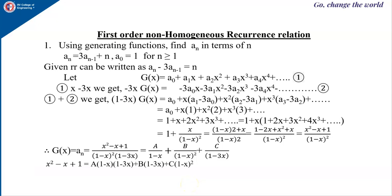Good morning. In my last video, you have seen how to solve the recurrence relation using generating functions — that is, first order and second order homogeneous recurrence relations. Today in this video, we are going to see how first order and second order non-homogeneous recurrence relations can be solved using generating functions. Let us first consider the first order non-homogeneous recurrence relation: aₙ = 3aₙ₋₁ + n, with a₀ = 1, for n ≥ 1.